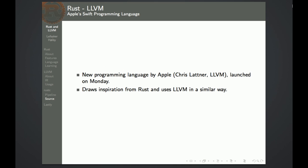This Monday, as we recorded this session, Apple released their new programming language called Swift, and it's actually kind of similar to Rust — it draws some inspiration from it. It's written mainly by Chris Lattner, who is also the main person behind LLVM.